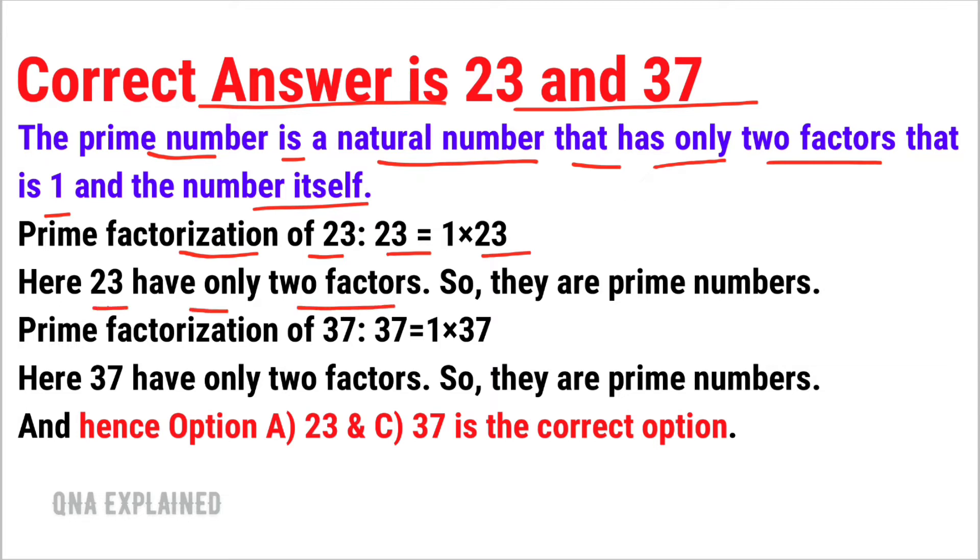two factors, so they are prime numbers. Prime factorization of 37: 37 = 1×37. Here 37